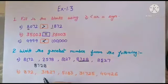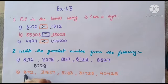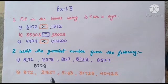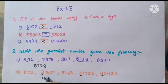For the next set, we look at the first digit. One number has only 3 digits, so it is not the greatest. Among the 5-digit numbers, the first digits are 3, 3, and 4 — since 4 is greatest, our answer is 40,426.